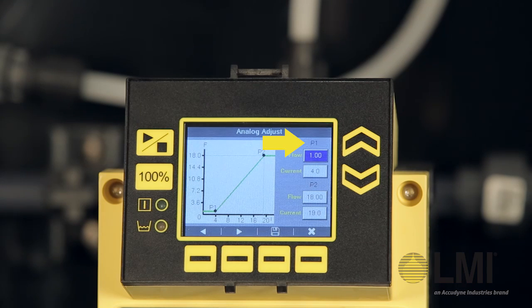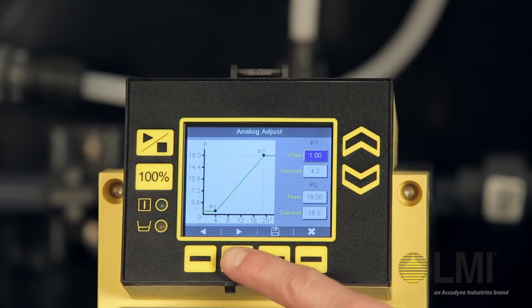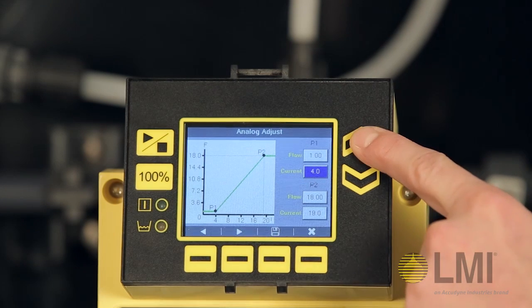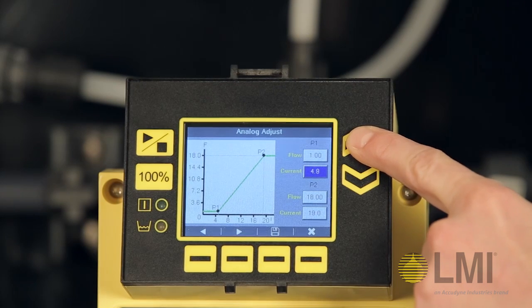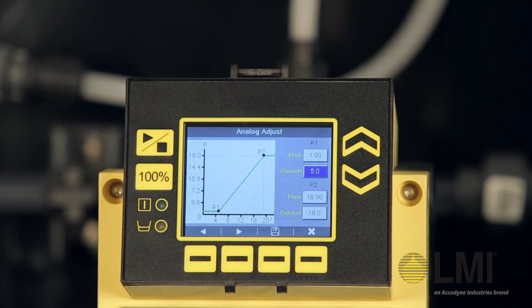As an example, we'll adjust the parameters for point 1. First, we keep the flow rate at 1 gallon and then scroll down to adjust the current to 5 milliamps and below. The chart adjusts to reflect the updated settings.